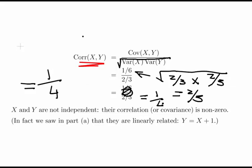X and Y are not independent — their covariance and correlation are non-zero. We also already knew from part B that they are linearly related.